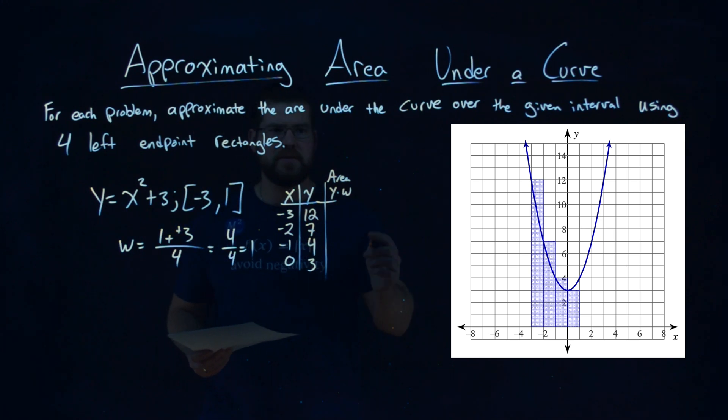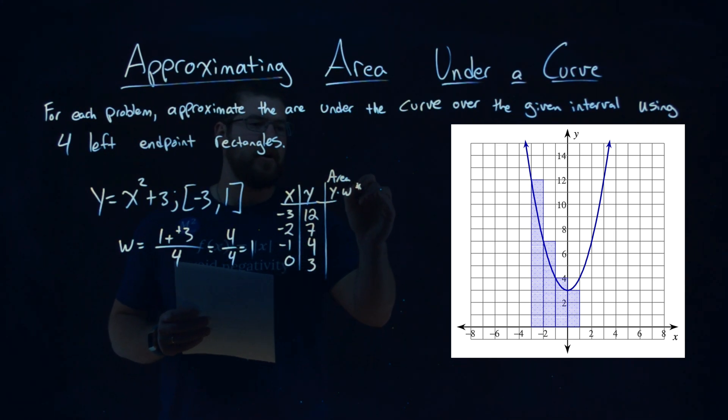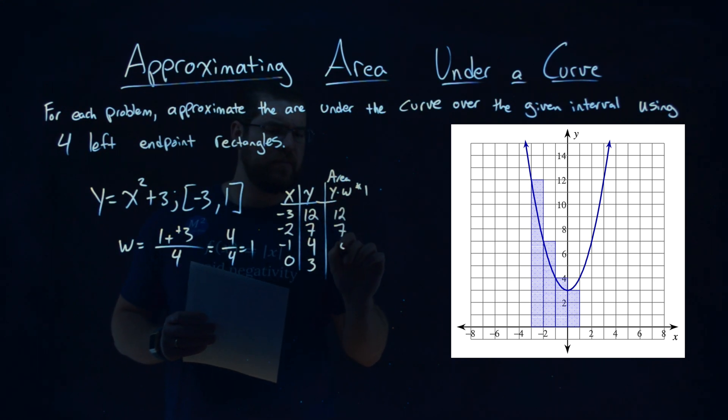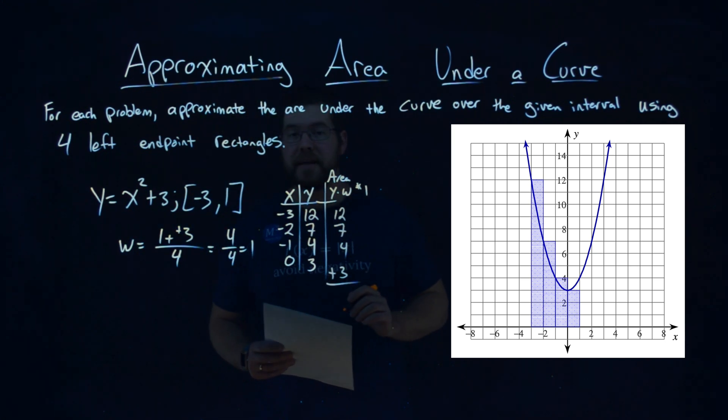Well, the width is just 1 here, so really we're just multiplying by 1. And so we just rewrite the y values: 12, 7, 4, 3. And that gives us the area of each rectangle.